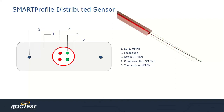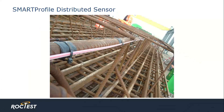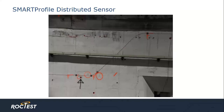The smart profile sensing cable is typically used for concrete structures. Here you can see it embedded in concrete — first it's affixed to the metal rebar and then the concrete is poured inside the cage. Here is another example where the smart profile is bonded on the concrete surface using a special glue to assure a good bond with the hosting structure.